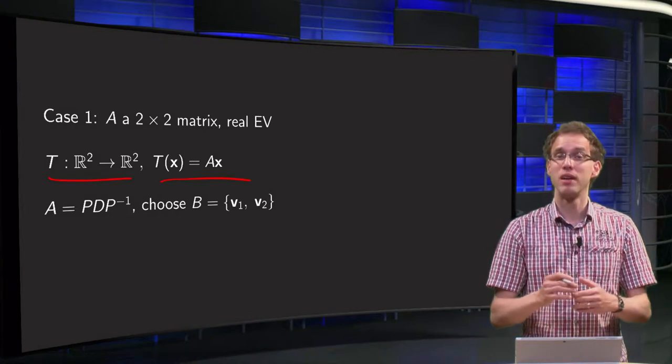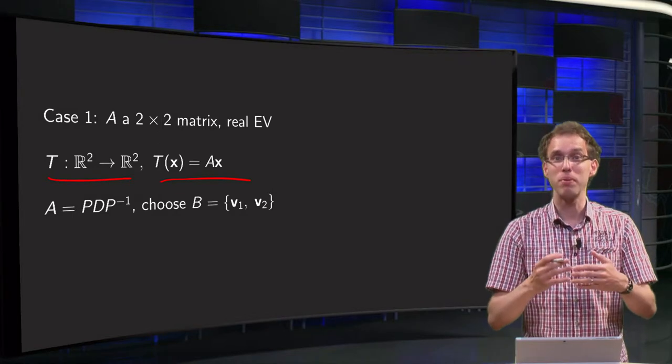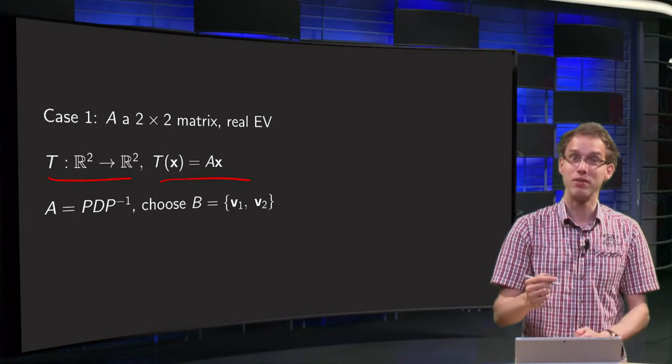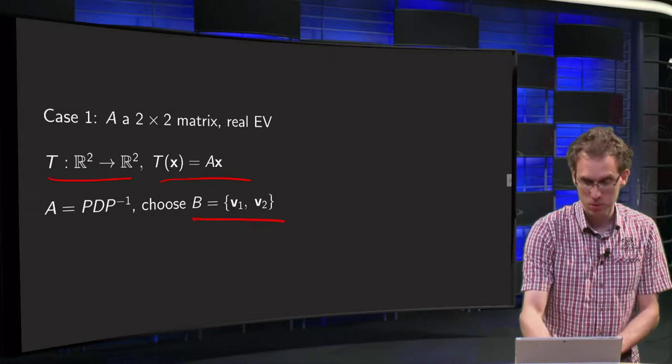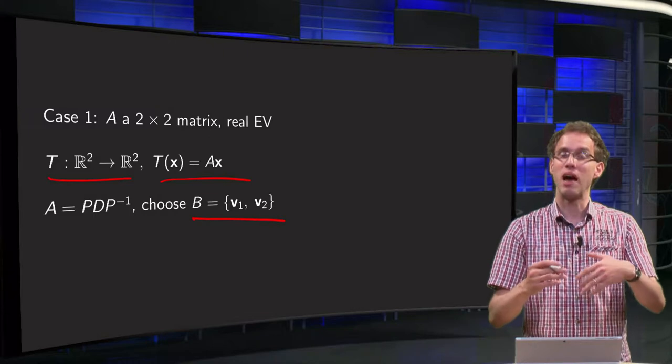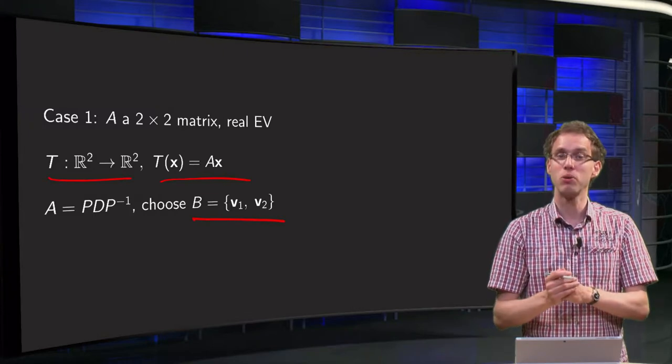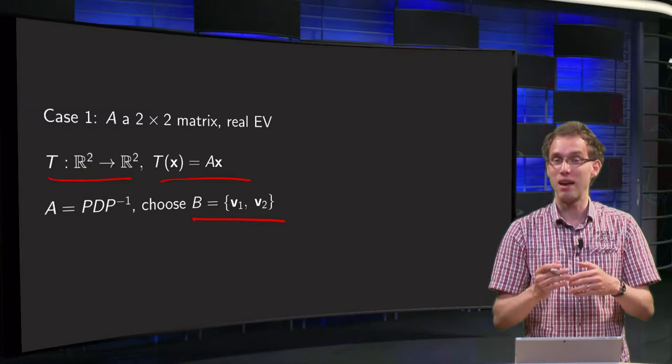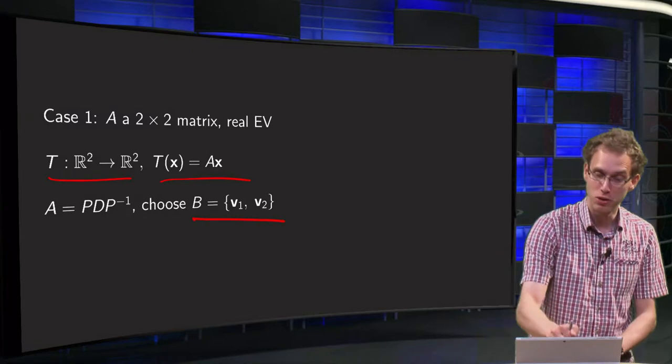What are we going to do now? We're going to view this mapping with respect to another basis. We can choose the basis B consisting of both eigenvectors of A, and then take a look at how our mapping looks with respect to this new basis B.